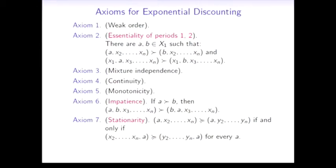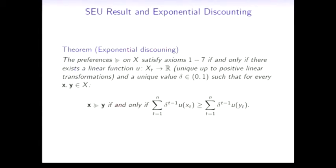Finally, axiom number 7 is the axiom of stationarity, which is the strongest axiom here. It says that if you have this particular preference and there's a common consumption in the first period, then if you shift both consumption streams by the same amount of time, your preference will remain the same. With these seven axioms we can easily obtain the exponential discounting form.